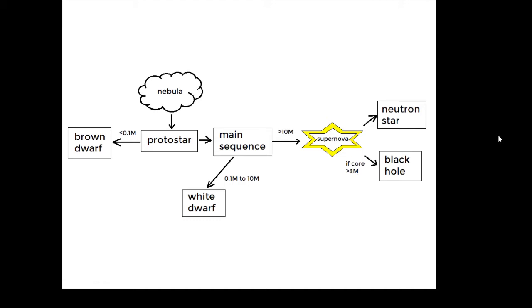Basically a hot blob but not hot enough for fusion to start. If it's greater than 0.1M then fusion will start and it will become a main sequence star. If its mass is between 0.1M up to 10M, then that is what our Sun does and it will end up as a white dwarf.